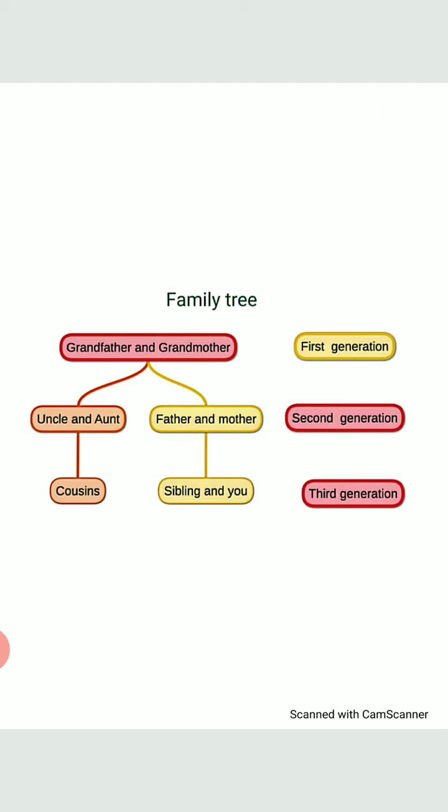Move to the second line: here it is written uncle, aunt, mother and father. This is our second generation. In the last line is written cousins, you and siblings — this is our third generation. Kids, you will also draw this family tree in your rough notebook and write the names of your family members. Do not forget to write your own name.